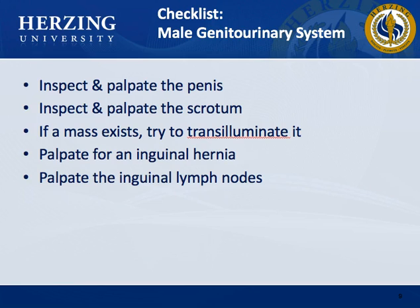A checklist for male genitourinary system assessment includes: inspect and palpate the penis; inspect and palpate the scrotum — if a mass exists, try to transilluminate it; palpate for an inguinal hernia; and palpate the inguinal lymph nodes.